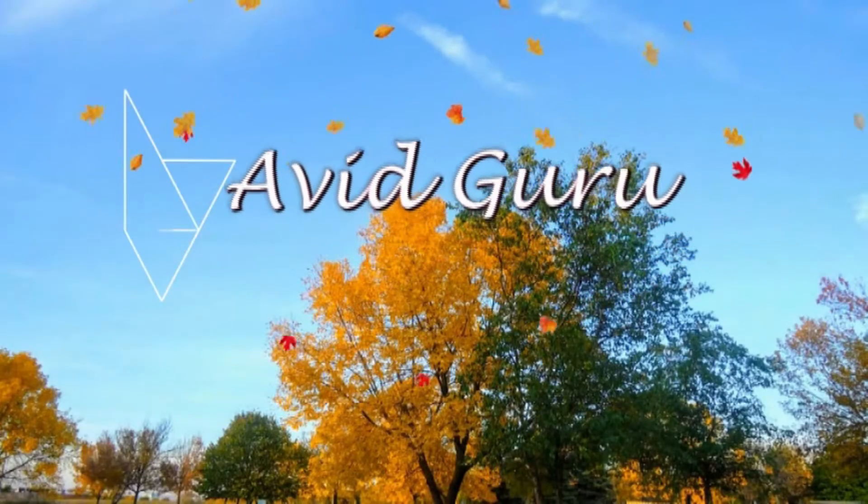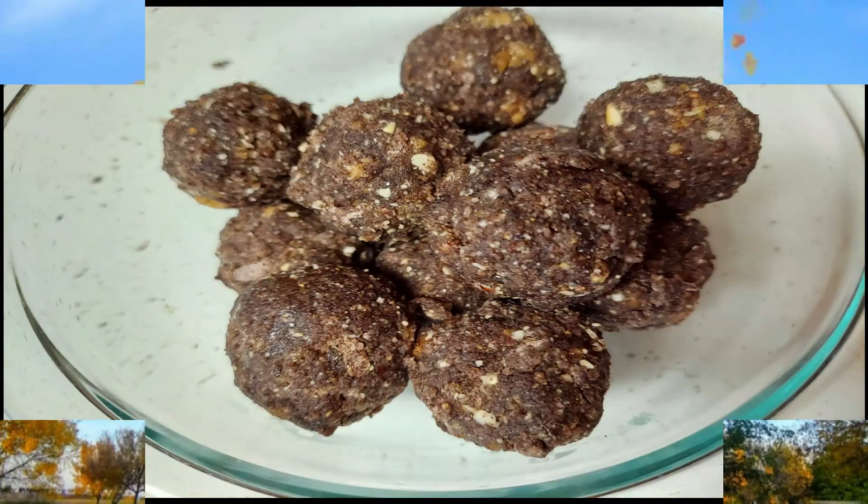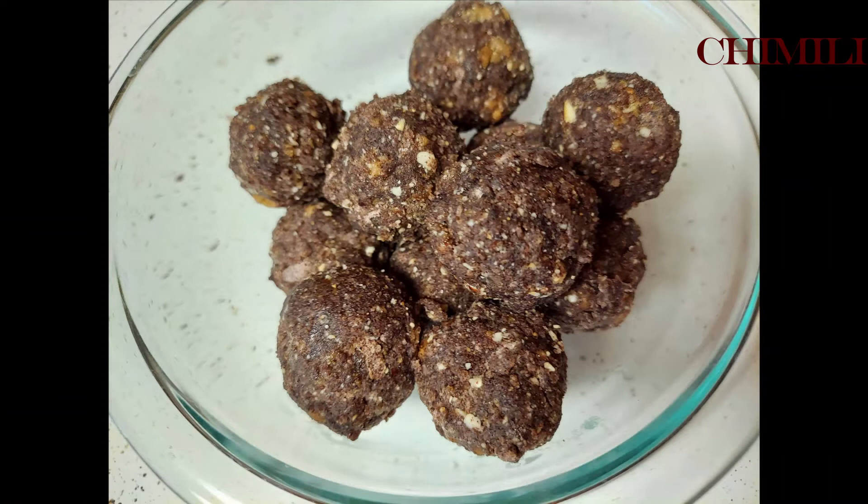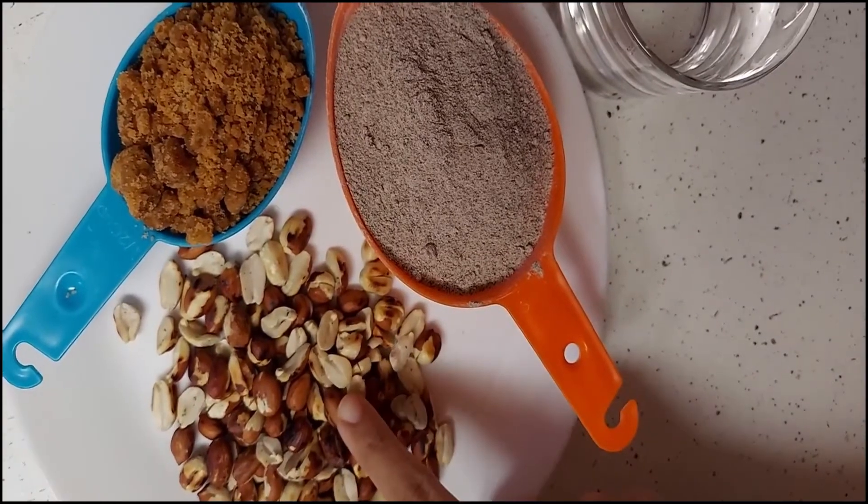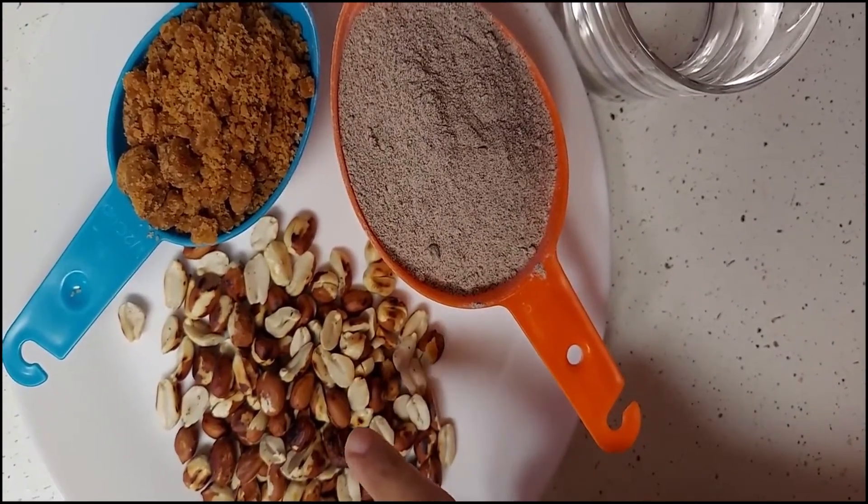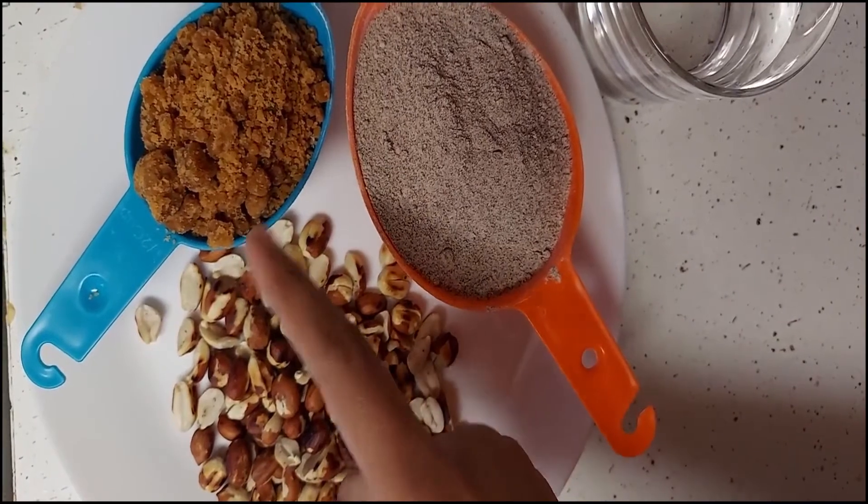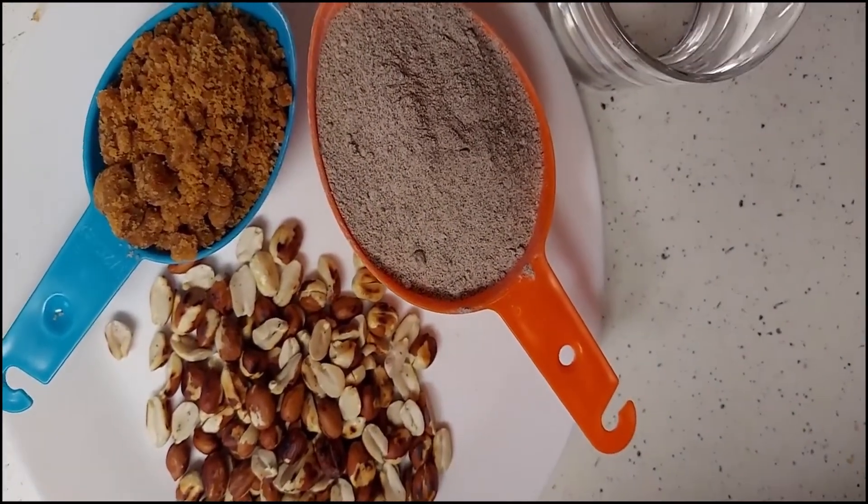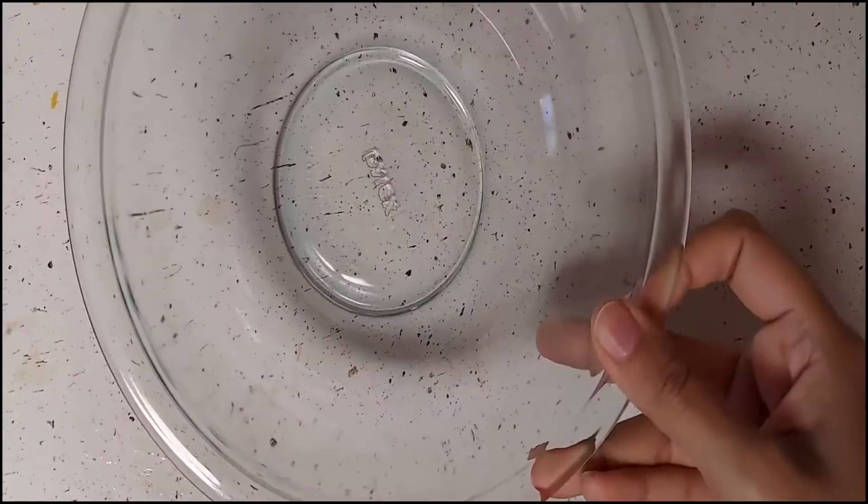Hello viewers, welcome to my channel. This is Geeta. This video shows how to make Chimilis, also known as Ragi Laddus. This is the healthiest snack. It requires only three ingredients: roasted peanuts, one cup of jaggery, and one cup ragi flour, and enough water for making the dough.